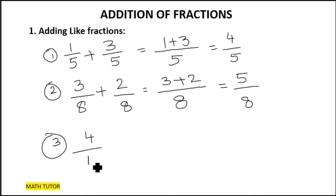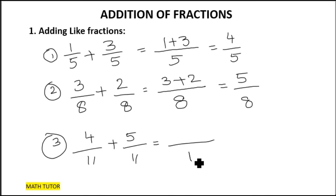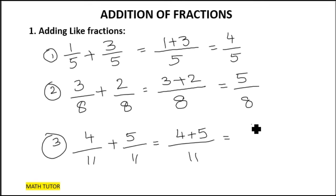One more example: four by eleven plus five by eleven. As you can see, both have the same denominator — eleven — so I'm keeping eleven as it is, and then I'm going to add just the numerators four and five. Four plus five equals nine, so the answer is nine by eleven. Adding like fractions is very easy!